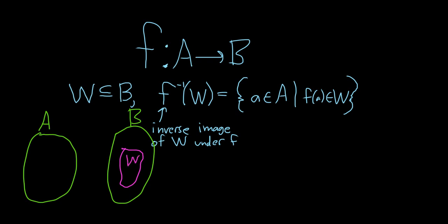So the inverse image is a subset of A, right? Because look, it's all of the little a's in capital A. So it resides inside A. So this is f inverse of W. So what is it? It's all of the little a's in A that go to W.